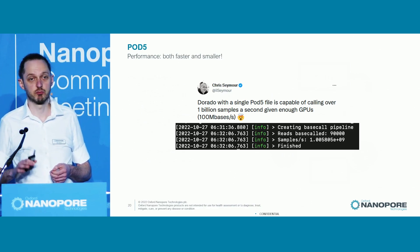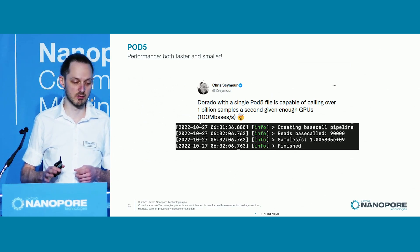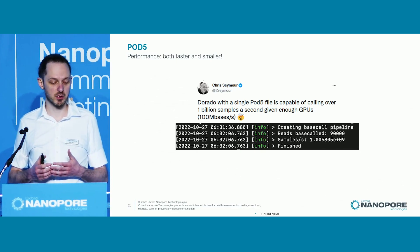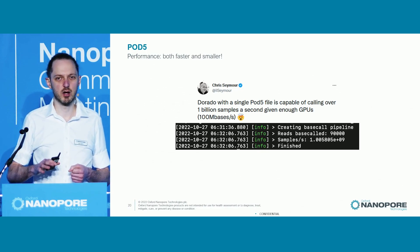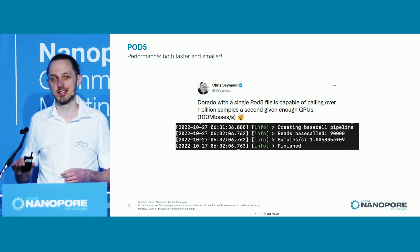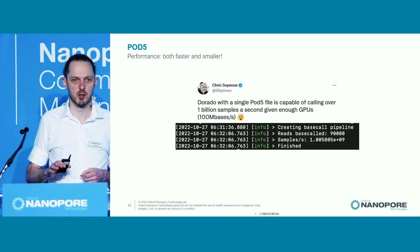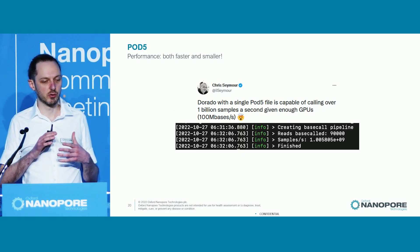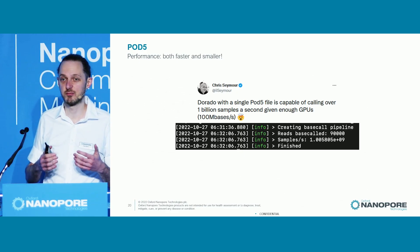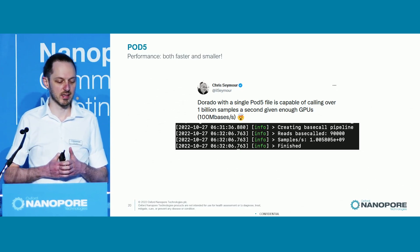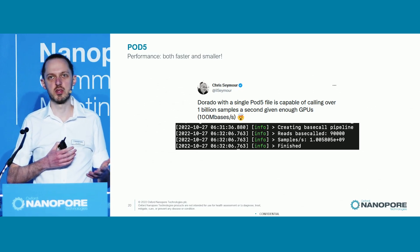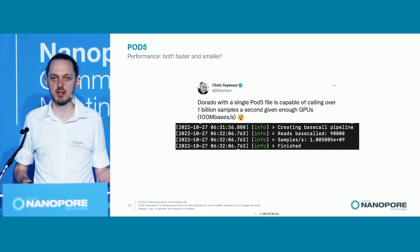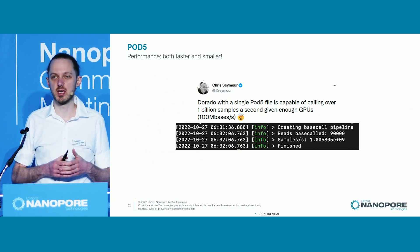The benchmarking we've done shows reading from Pod5 to be an order of magnitude or more faster than doing the same from Fast5. To give an illustration, Dorado is able to base call all the data from a single Pod5 file at over a billion samples per second — that's over 1.7 times the maximum theoretical output of a PromethION 48 given current sequencing parameters. It's also worth highlighting that although we didn't set out to do this, we also have file size gains with Pod5 — smaller files. For long reads, we're talking savings of around 4%, and for files with lots of short reads, they can be considerably better.